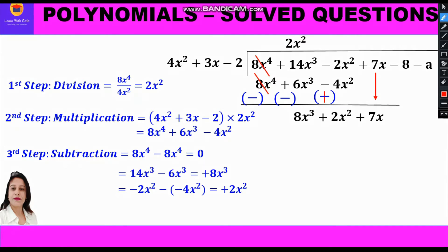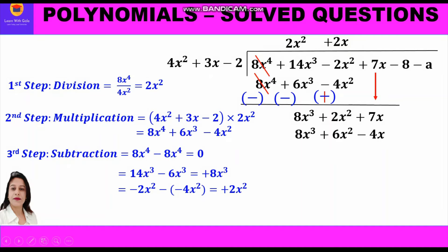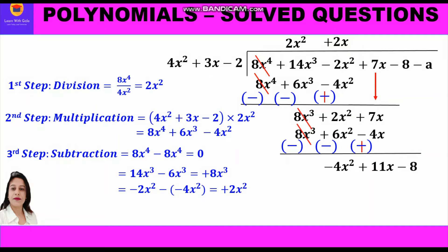Now we repeat the three steps. First, divide 8x³ by 4x² to get 2x as the next term of the quotient. Next, multiply 2x with each term of the divisor: 2x times 4x² gives 8x³; 2x times 3x gives 6x²; 2x times minus 2 gives minus 4x. Then for subtraction, change the signs. 8x³ cancels with 8x³. 2x² minus 6x² gives minus 4x². 7x plus 4x gives 11x, and we bring down minus 8.